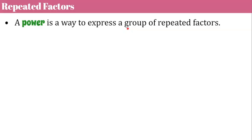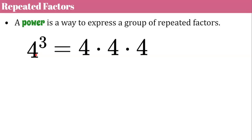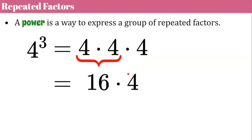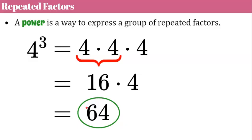A power is a way to express a group of repeated factors — think of it as a more compact or simpler way to write a long string of numbers being repeatedly multiplied. So four cubed equals four times four times four — three fours all being multiplied. We simplify: four times four is sixteen, then sixteen times four is sixty-four. So four cubed is equivalent to sixty-four.